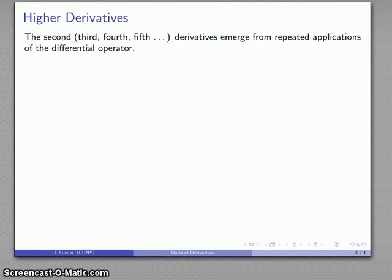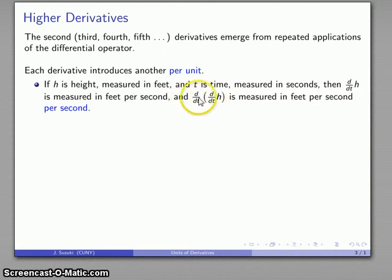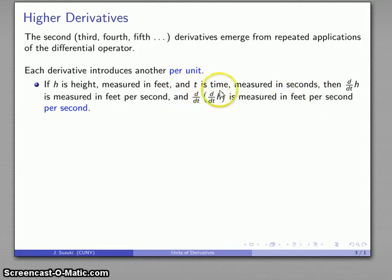We can continue to differentiate — we can talk about second, third, fourth, fifth derivatives — and all of these emerge from repeated applications of the differential operator. Each differentiation introduces another 'per unit.' So if height is measured in feet and t is time, the first derivative dh/dt is measured in feet per second. Differentiating again gives feet per second per second — the change in height per second per second from each of the dt's.